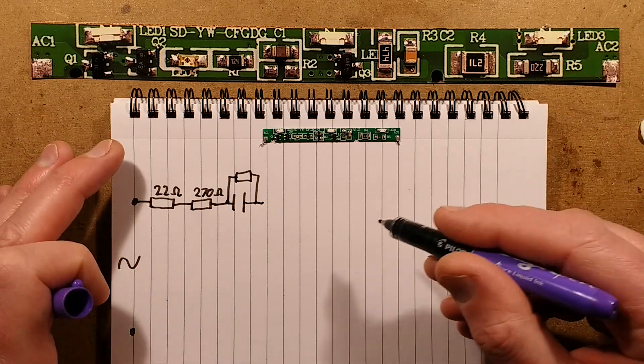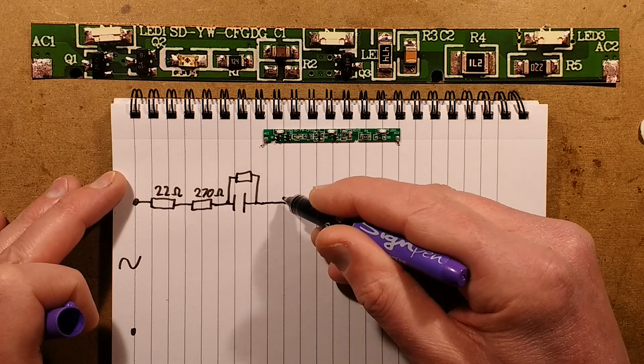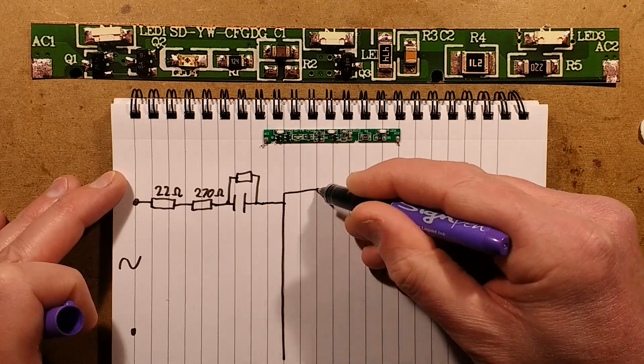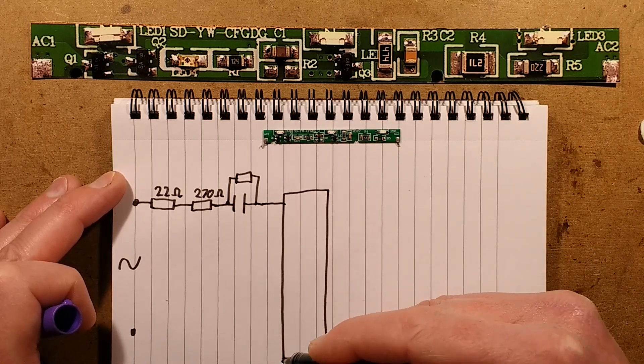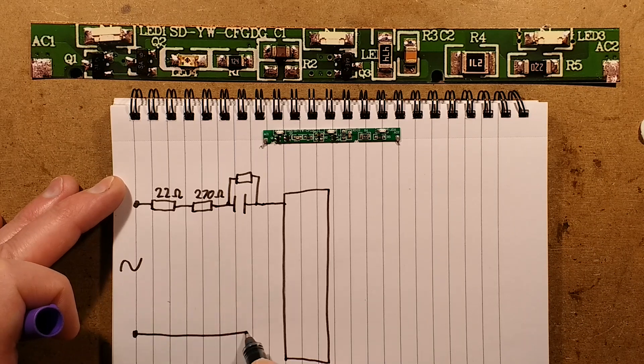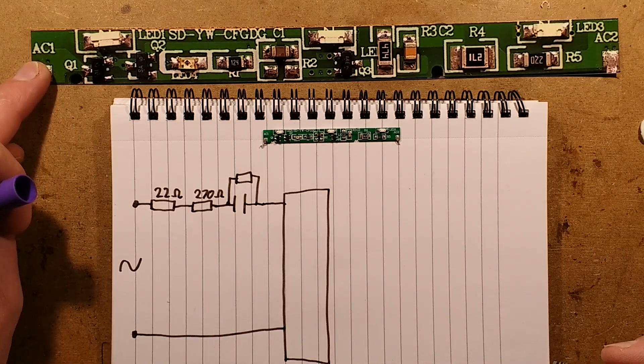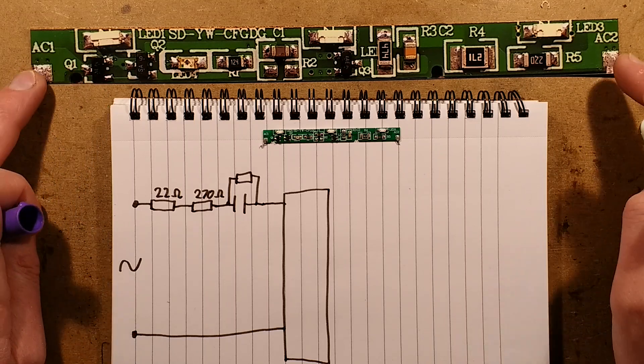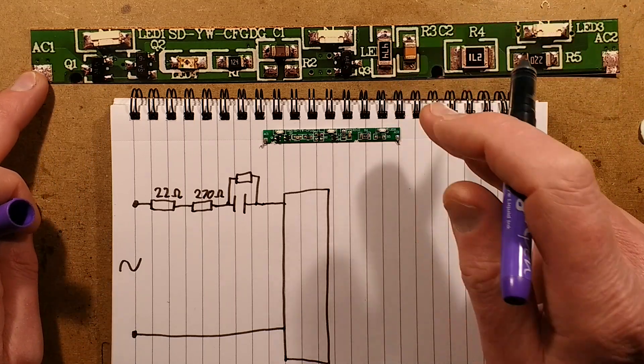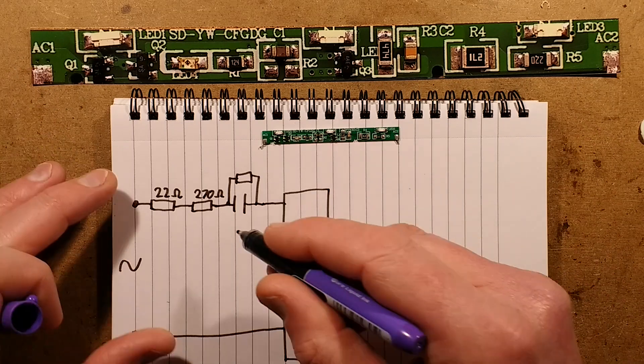Then it goes to a bridge rectifier, and the bridge rectifier is quite interesting because it's actually formed from two components. This end of the circuit board goes to one part of the bridge rectifier, and this end goes via the capacitive dropper to the other end.